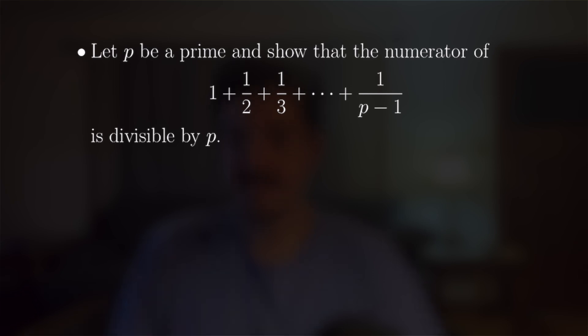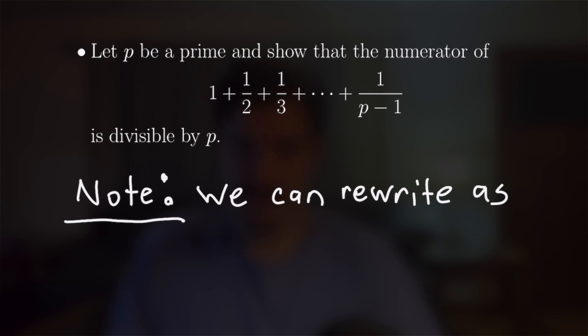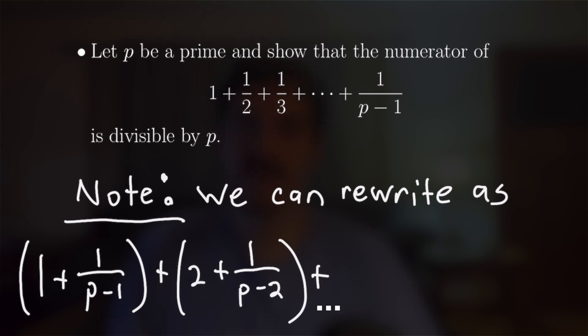So our third example says let p be a prime and show that the numerator of 1 + 1/2 + 1/3 all the way up to 1/(p-1) is divisible by p. Now in order to do this, we're going to have to rewrite our sum a little bit. So I'm going to rearrange our sum so that we have going left from right, we have the first and last term, the second and second to last term, etc., all the way until the middle terms there.